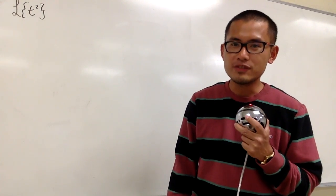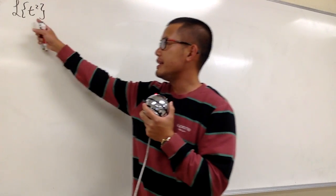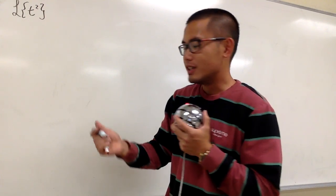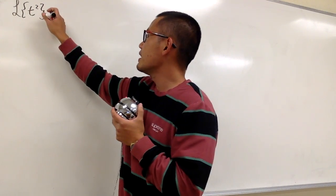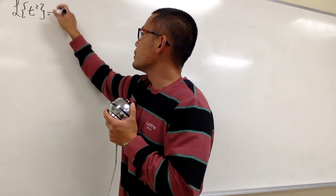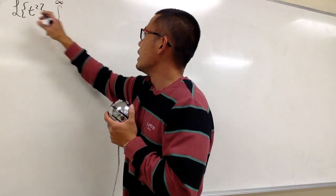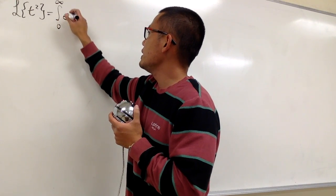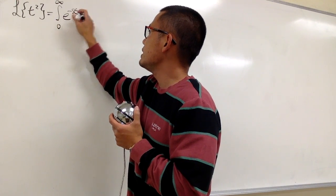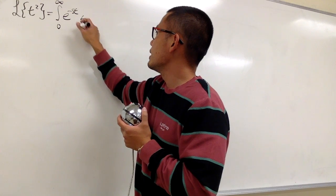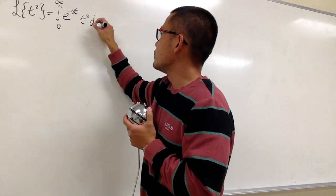We are going to work out the Laplace transform of the function t squared, and we'll be using the definition for this. So let's go right ahead and say this is equal to the improper integral from 0 to infinity of e to the negative st times t squared dt.